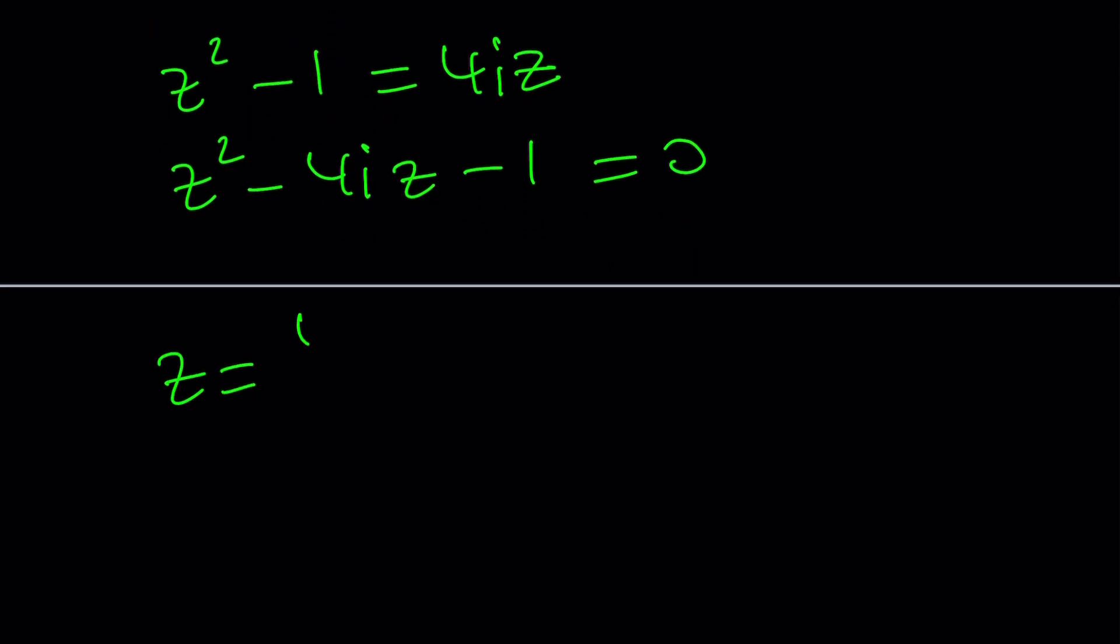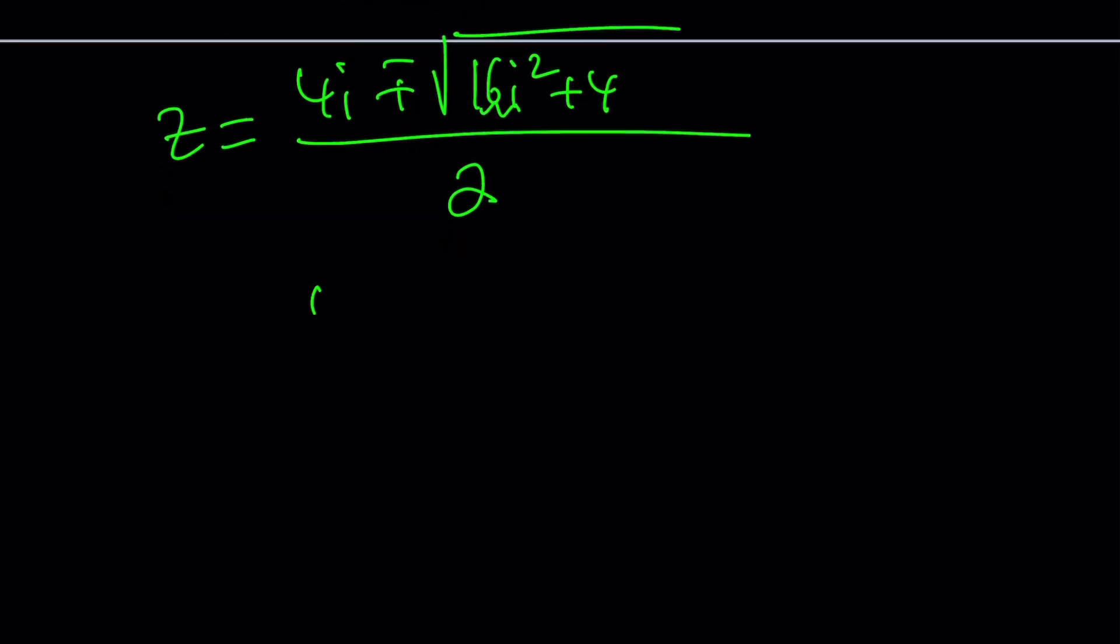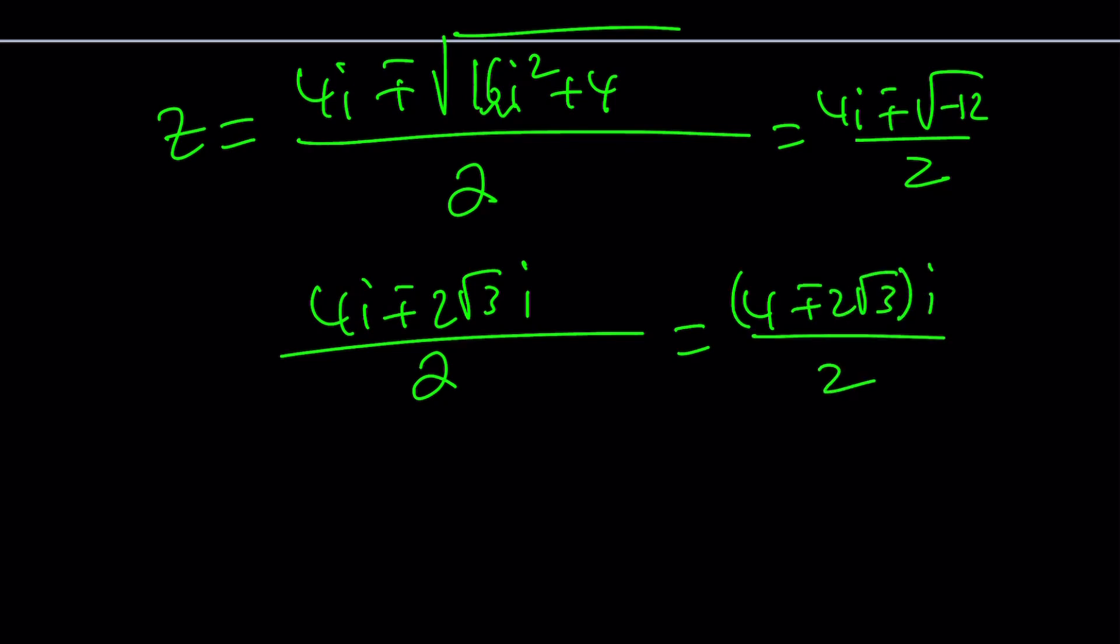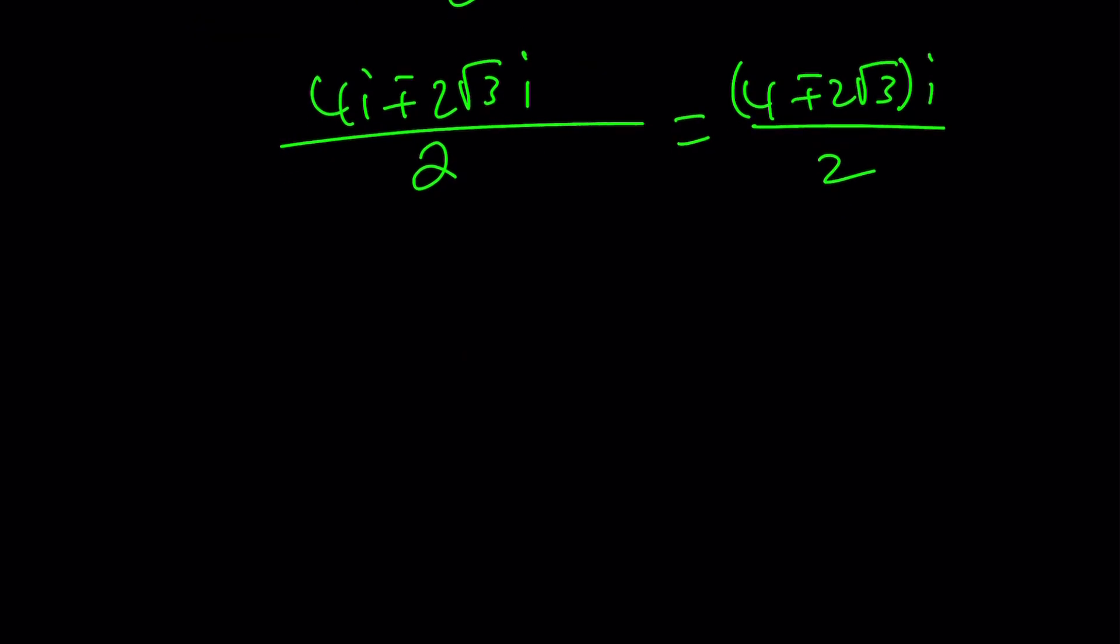z equals negative b plus minus the square root of b squared. You have to square negative 4i, which is 16i squared. Minus 4ac, which is plus 4. Notice that i squared is negative 1. So this is negative 16 plus 4 is negative 12. So this gives us 4i plus minus square root of negative 12 over 2. But that is basically 2 root 3i. And then we can take out i. So write this as 4 plus minus 2 root 3, all multiplied by i divided by 2. Now, we can divide everything by 2 in the numerator. That's going to give us 2 plus minus root 3 multiplied by i divided by 2.